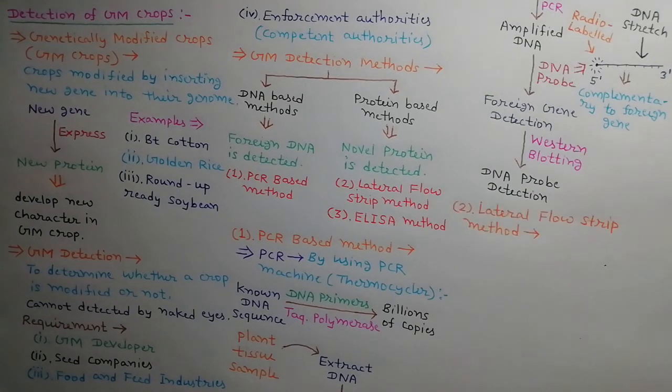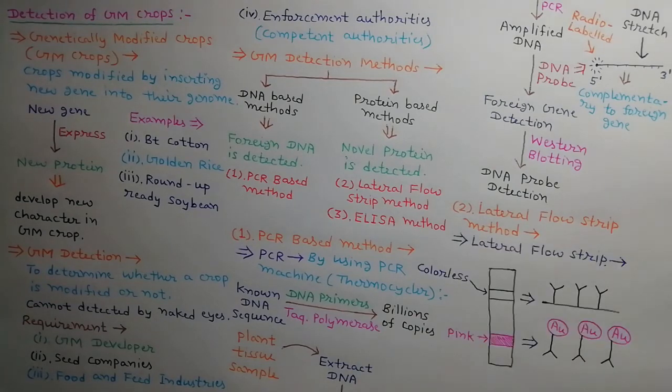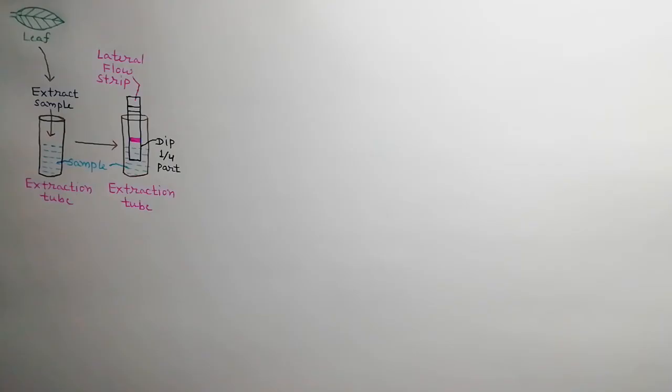The second method we will discuss is lateral flow strip method. Antibodies are attached on specific regions of this lateral flow strip, which are complementary to desired protein. As shown in the diagram, colorless region contains normal antibodies and pink region contains gold-labeled antibodies. In this method, protein sample is extracted in extraction tube and one by four part of strip is dipped into this sample as shown in the diagram.